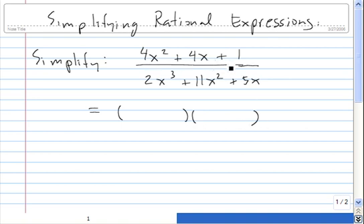I'm factoring first this 4x squared plus 4x plus 1. What I'm going to put in the first slot of each set of parentheses is the square root of this first guy, which is 2x.